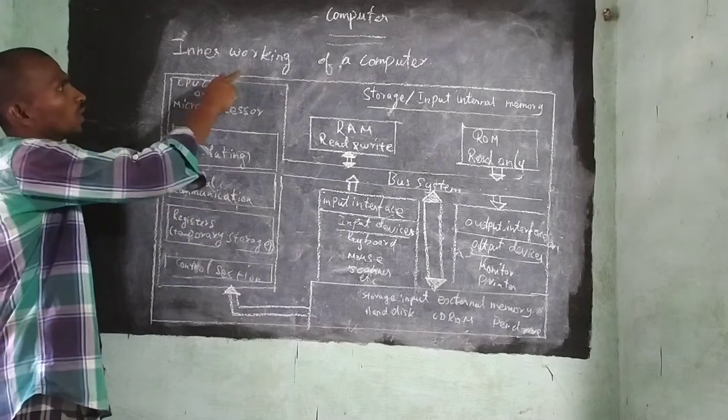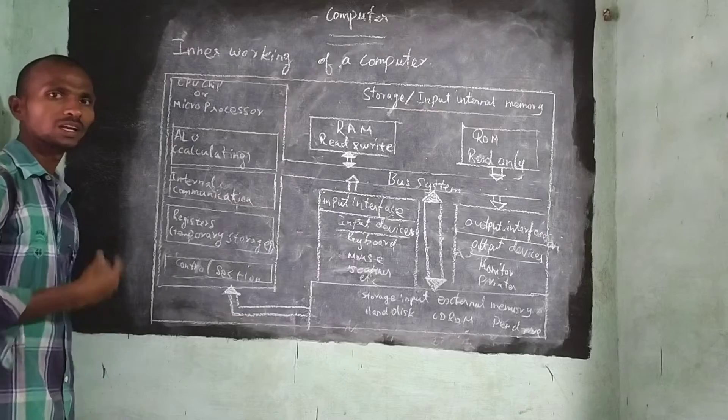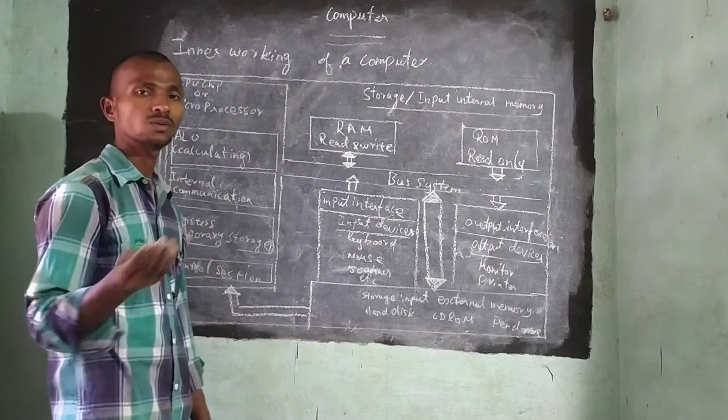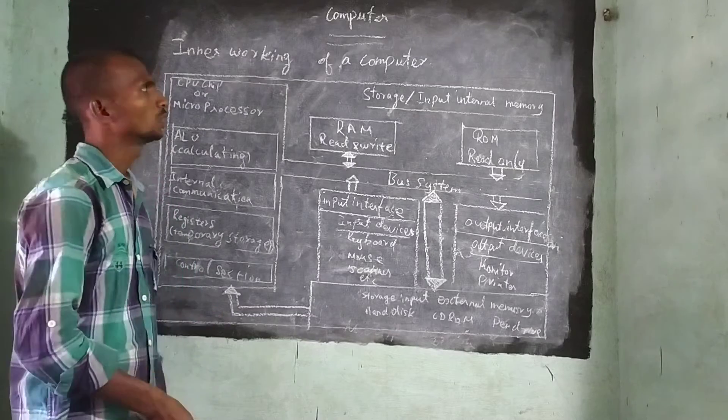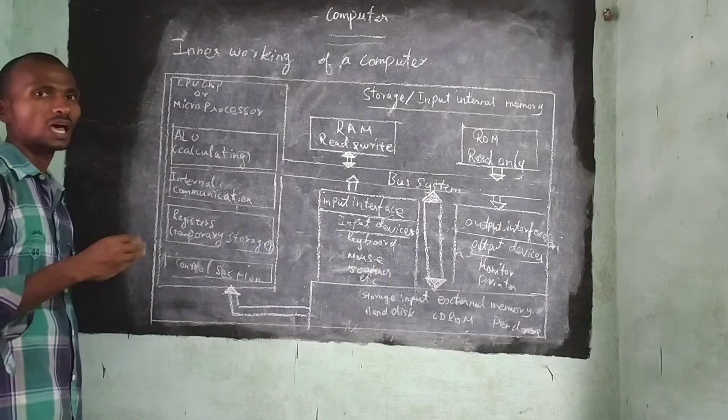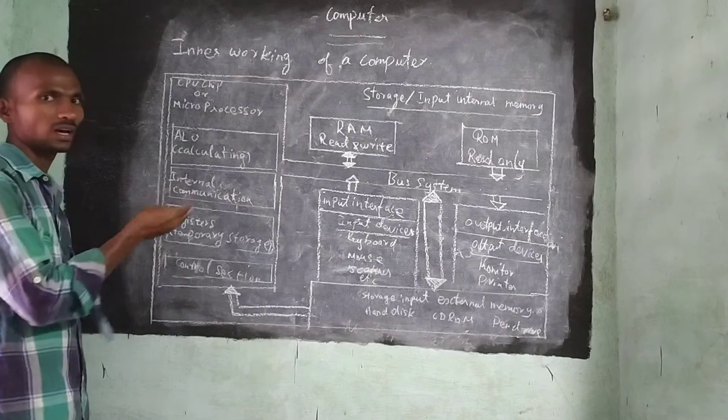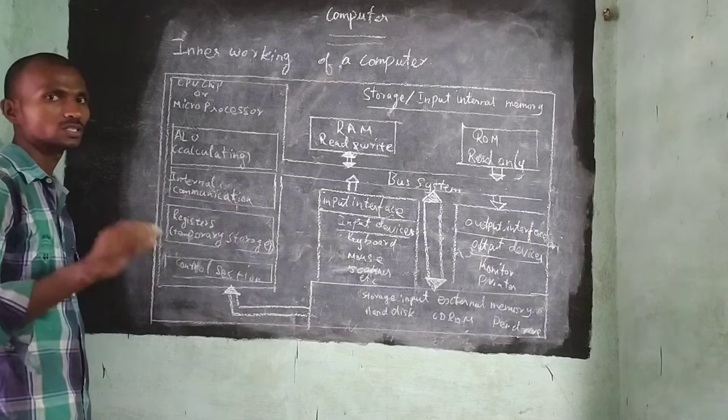Now we are going to see inner working of a computer. We have found the external parts of computers now. We know the external devices of the computer. So within the computer, what are the things happening? What is occurring inside the computer? Only we are going to see now.